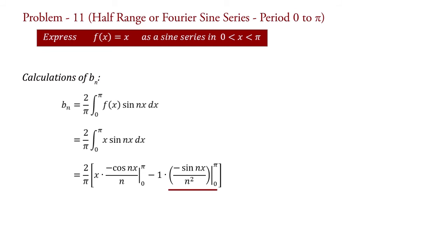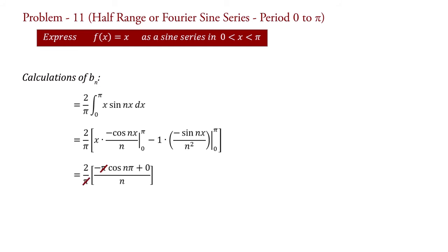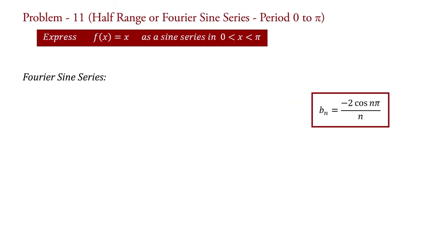This term contains sin functions and sin n π equal to 0, sin 0 equal to 0. Therefore, if we substitute the value of limits in this term, then we get bn equal to 2 upon π into bracket minus π cos n π plus 0 upon n. This π and this π cancel. Therefore, bn equal to minus 2 cos n π upon n.